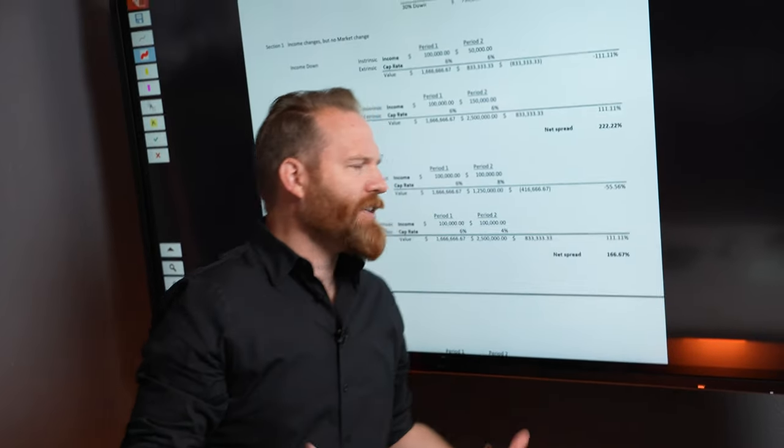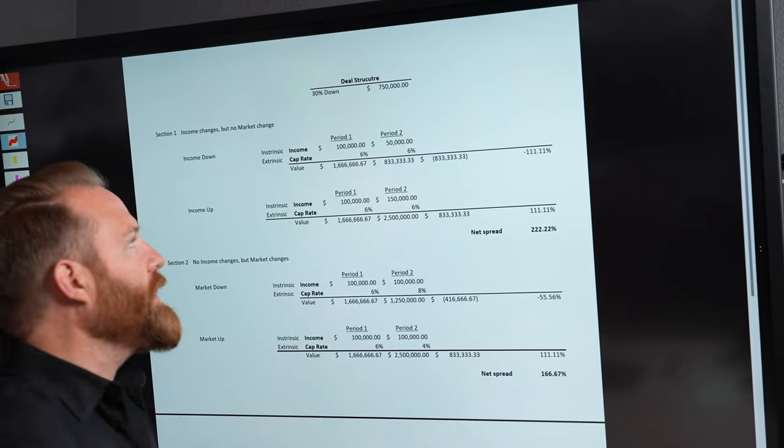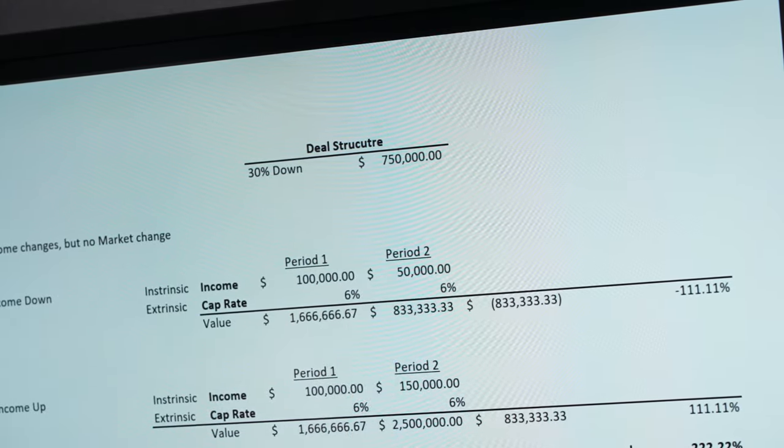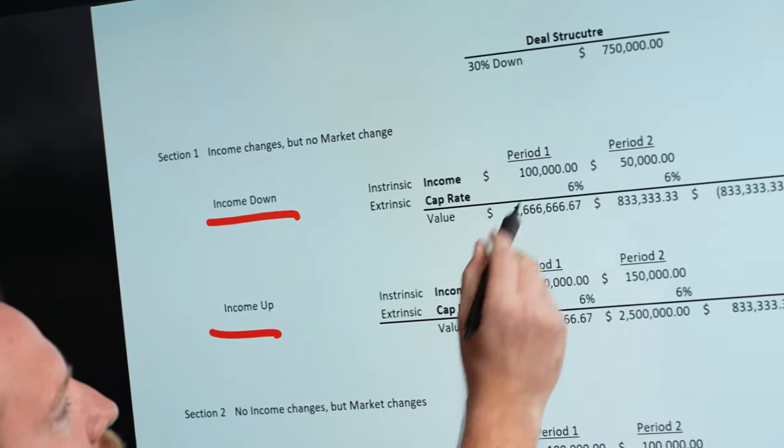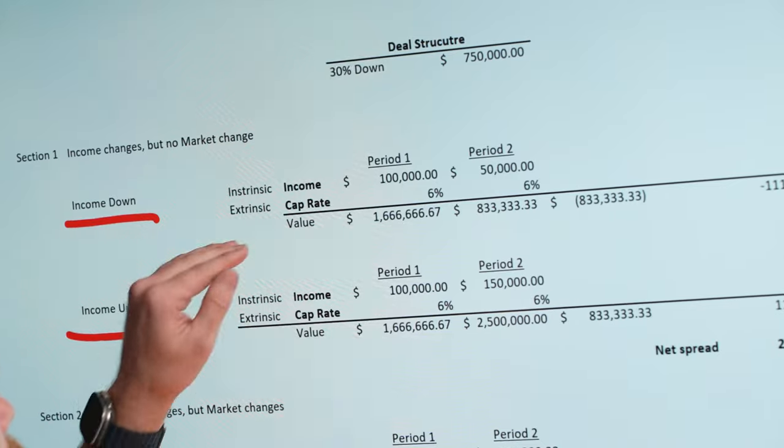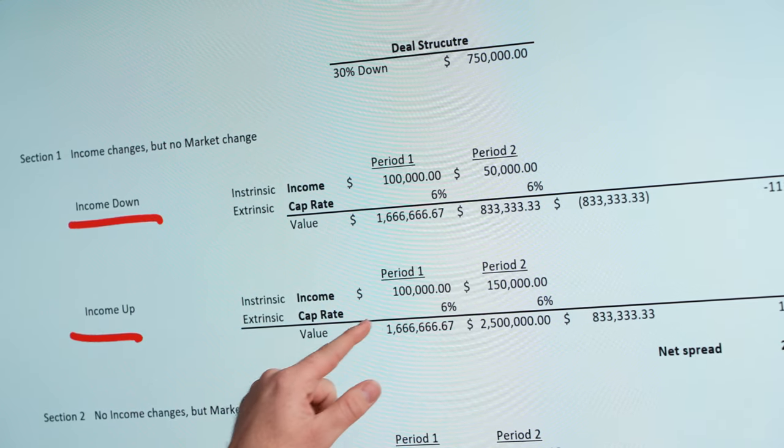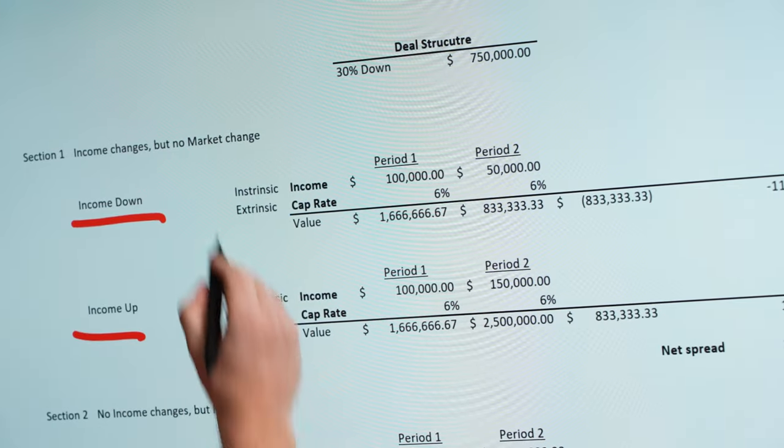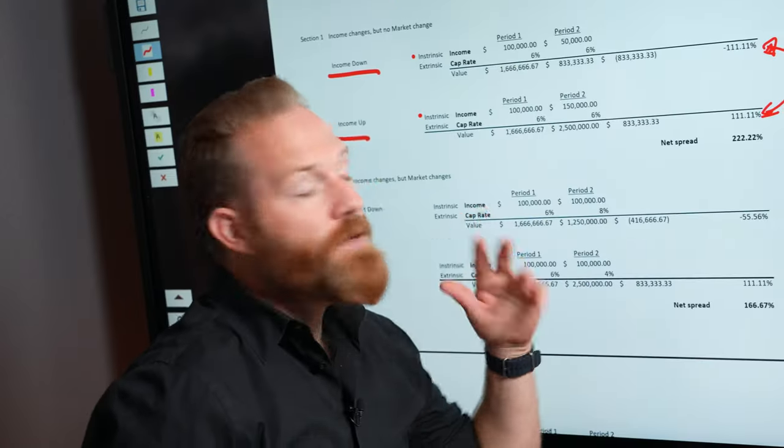So extrinsic, intrinsic, how much does this stuff really matter? Now we talked about what it is. Let's dive into the numbers. This stuff is actually outrageously impactful. To create a baseline here, all things are equal. We're using a deal structure of 30% down at $150,000. Now to show this, if you had income down and income up, this is the first period versus the second period. Think of that as year one or year two. Intrinsic is income. Extrinsic is cap rate. We're saying the cap rate or that price it would sell at doesn't change, but the income does.